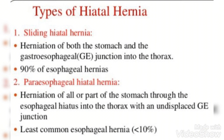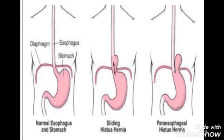Sliding hiatus hernia is the most common. Here, the herniation of both the stomach and the gastroesophageal junction occurs into the thorax. In case of paraesophageal hiatus hernia, the herniation of all or part of the stomach occurs through the esophageal hiatus into the thorax with an undisplaced gastroesophageal junction. It is the least common. Here are the pictures of sliding hiatus hernia and paraesophageal hiatus hernia.